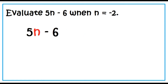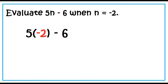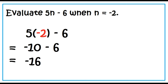Evaluate 5n minus 6 when n equals negative 2. Substitute negative 2 for n. Multiply negative 2 to 5 first before subtracting 6. Negative 10 minus 6 is equal to negative 16.